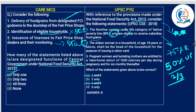The eldest woman in a household aged 18 years or above shall be the head of the household for the purpose of issuing the ration card. By intuition there is substantially nothing wrong with this statement, so statement two is correct. When you know two is correct, B is the right answer — you don't need to read the third statement. So B is the answer.